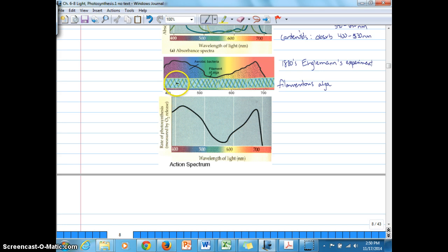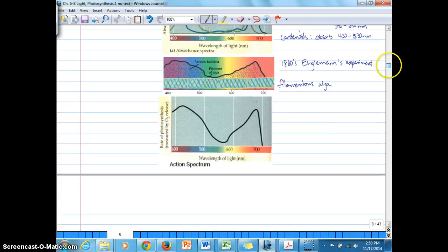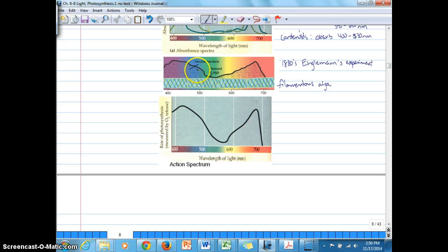And along the length of the alga, there were different wavelengths of light that the alga was exposed to. And so, you know, assuming that pigments absorb light in these specific regions of the visible spectrum that we listed, then there are certain pigments that are absorbing light all along the length here of the filamentous alga exposed to different wavelengths.